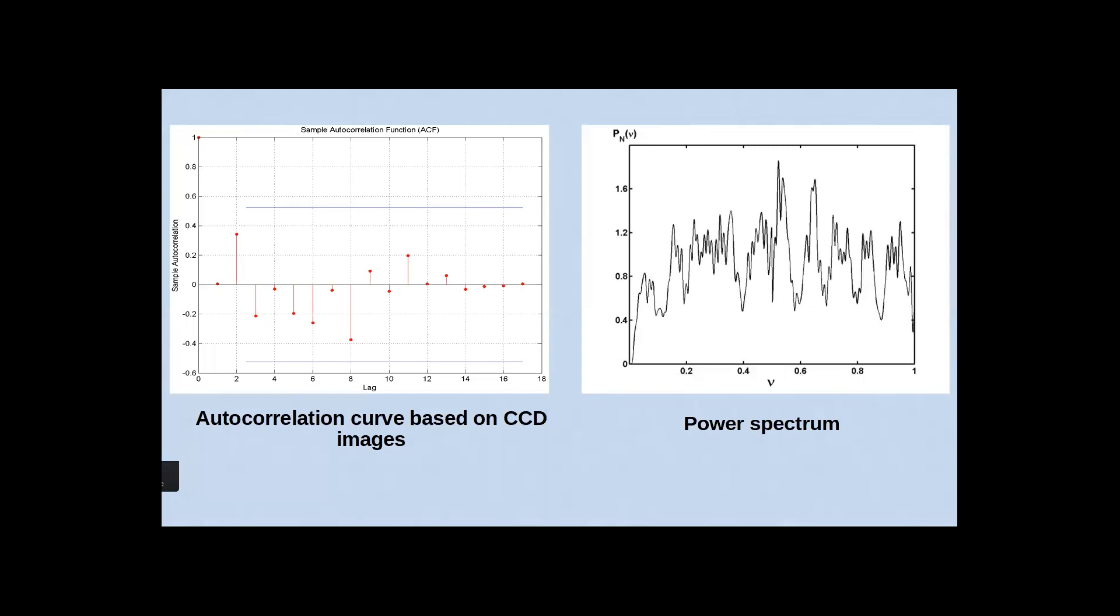Now we are looking for whether this variability is periodic, quasi-periodic, or not. For this, we first use autocorrelation, the simplest way to find any periodicity. We construct the autocorrelation curve based on CCD images using the Scargle method. Here you see we give values to lag up to 18. Lag means shifts. In the abscissa axis it shows lag, in the ordinate axis it shows autocorrelation. When lag equals zero, autocorrelation equals one. You see it looks like a sinusoidal form.